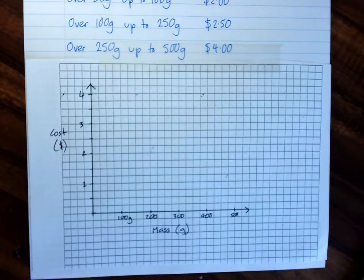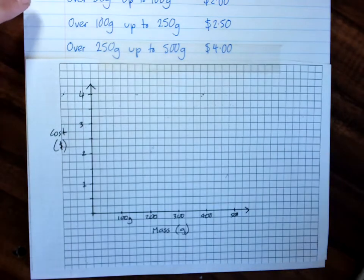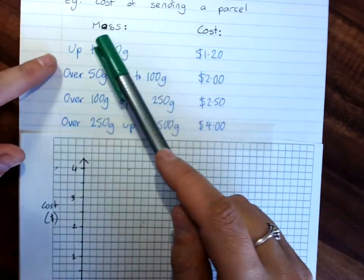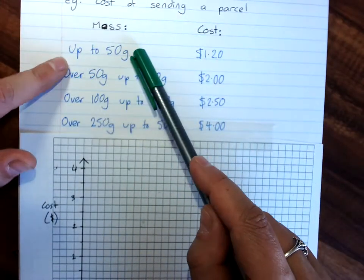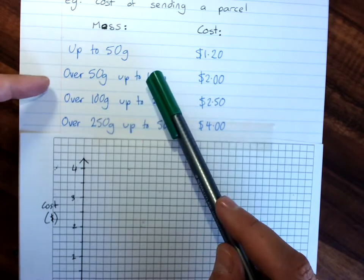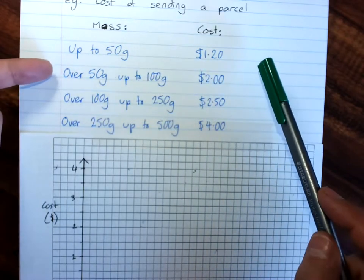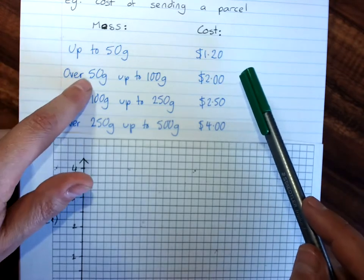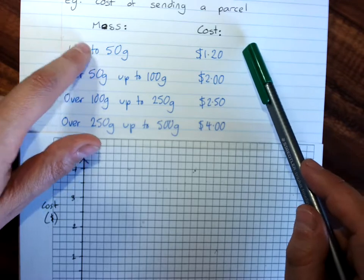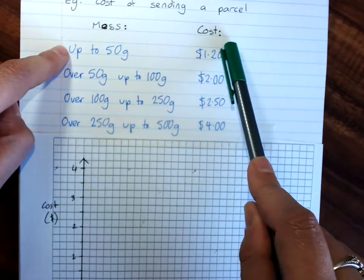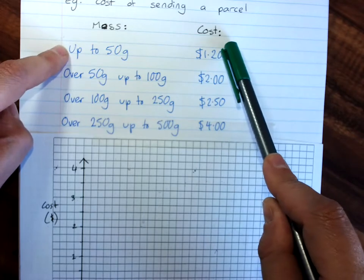Now, there's a notation that we use. Because, if we look at the values here, you'll see that up to 50 grams is then followed by over 50 grams. And, it's quite clear here that if I was sending a parcel that was exactly 50 grams, this is for over 50, this includes the 50, so it would be $1.20. But, I do have to show that in some way.